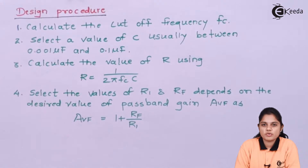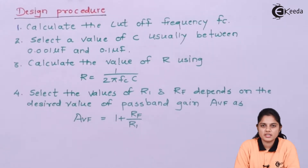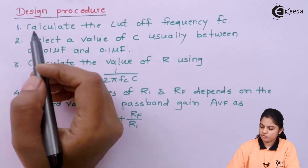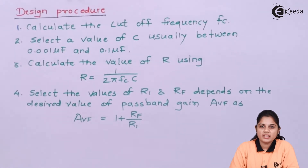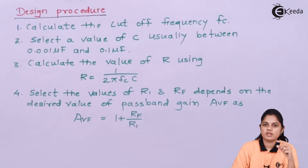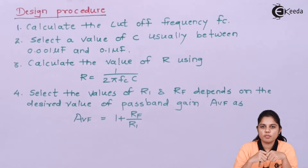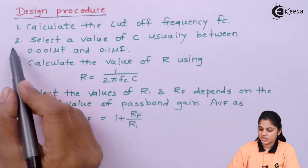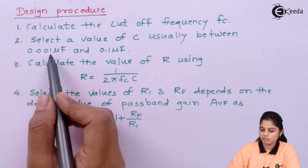Here we are going to see the procedure for designing a first-order Butterworth low-pass filter. If there is only one pair of a resistance and capacitor, it is known as a first-order filter. The first step is to calculate the cut-off frequency. If you remember the diagram for a low-pass filter, for the non-inverting terminal we connect the resistor and capacitor. If R and C values are given, your first job is to calculate the cut-off frequency, because cut-off frequency is decided by the values of R and C.